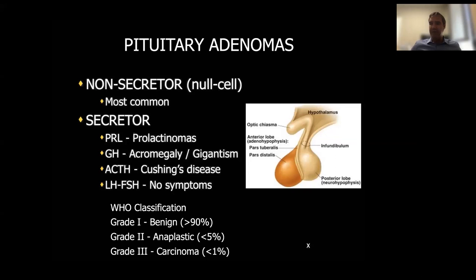When we talk about pituitary adenomas, we talk about the pituitary gland, its anatomy, location, and surrounding structures. Pituitary adenomas are, for the most part, benign tumors that come from the pituitary tissue itself. They were classically classified into two major categories: non-secretory, which were the null cell adenomas — tumors that do not stain for anything — and we now include gonadotroph adenomas in this category. These tumors stain for gonadotropin hormones but do not secrete them. Approximately half of tumors are non-secretory.